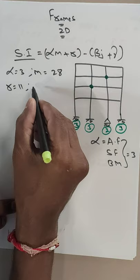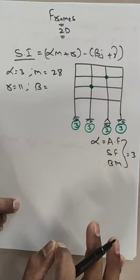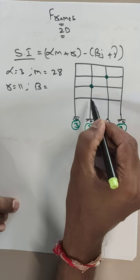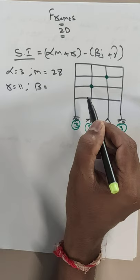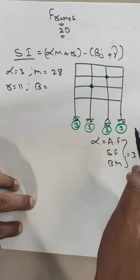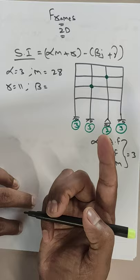Now beta is the number of available equilibrium equations at each and every joint. The available equilibrium equations at each joint are 3: summation of x equals 0, summation of y equals 0, and moment equals 0. So beta is equal to 3.